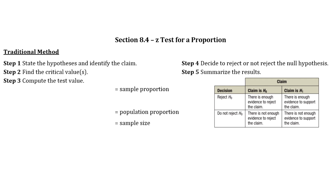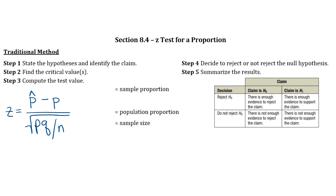You know the five steps for the traditional method. The only thing that's going to change when you're dealing with proportions is step three — when you compute the test value, it's going to be a different formula. Your z-value is found by doing p-hat minus p, all over the square root of p times q divided by n.